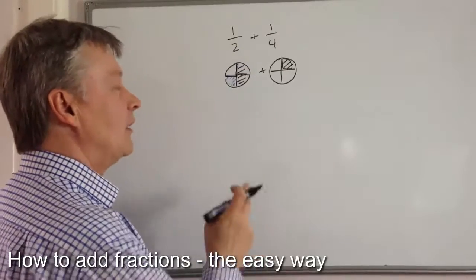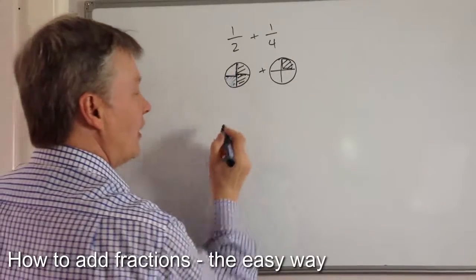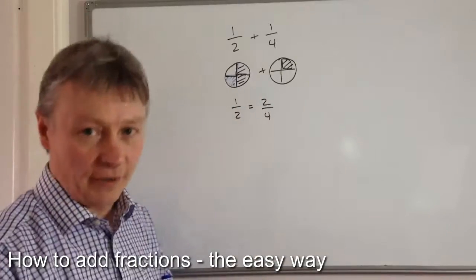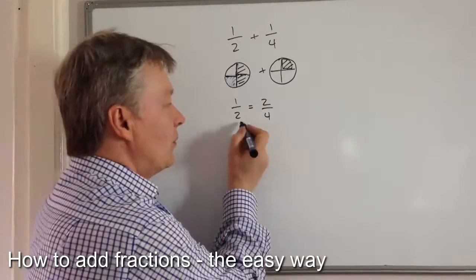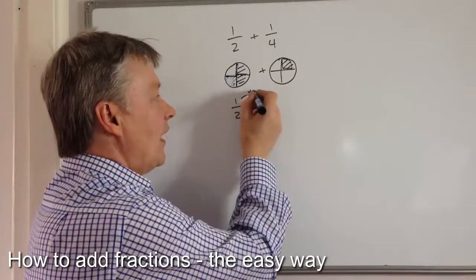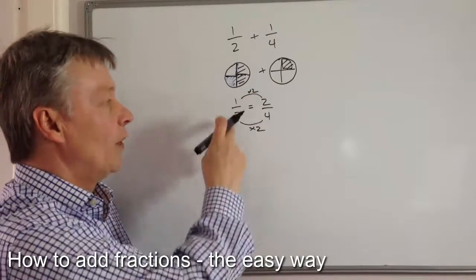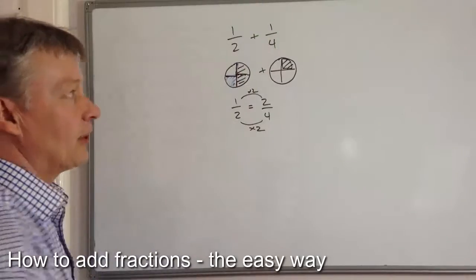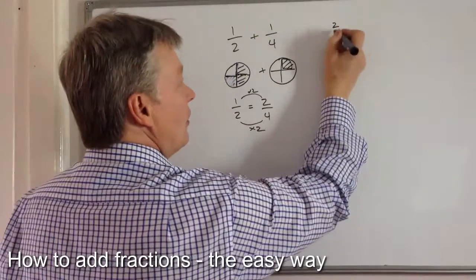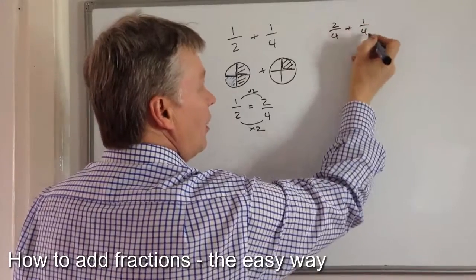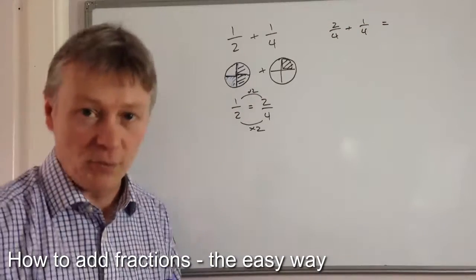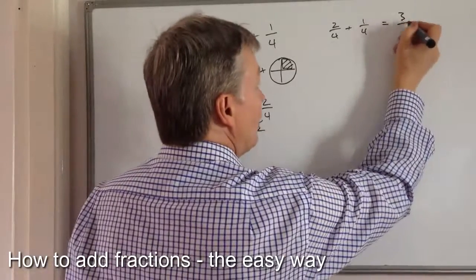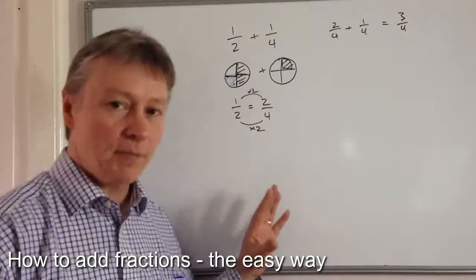But how do we do that? Well, half is exactly the same as two quarters, or two out of four. If you remember from the previous video, we multiply the top and bottom both by two, so one half is the same as two over four. So I'm going to rewrite this sum as two over four plus one over four. Two quarters plus one quarter equals three quarters.